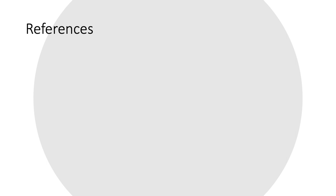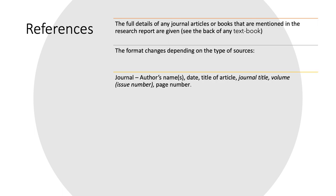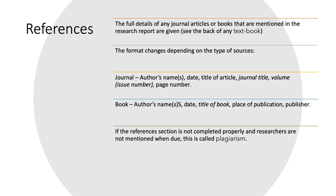Then our final section is our references. So, this is full details of any journal articles or books that are mentioned and examiners love asking you to write a reference. And I'm going to give you a bit of a practice in a sec. So, the format changes depending on the type of source. So, with a journal, you put the author's name, the date, the title of the article, the journal article, volume, issue number, and the page number. Whereas with a book, you put the author's name, the date, title of a book, place of publication, publisher. If the references section is not completed properly and the researchers are not mentioned when due, it's called plagiarism and it's a big issue in universities and they will check your references very thoroughly.